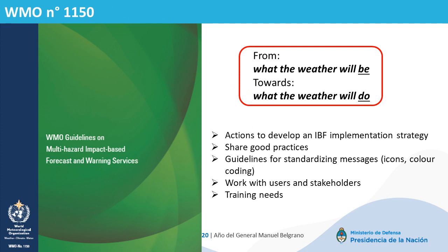The paradigm of forecast and warning services is changing. Met services are used to talk about what the weather will be, but society needs to know what the weather will do and how to ensure their safety and protect their property. That's why the World Meteorological Organization has written the guidelines on multi-hazard impact-based forecast and warning services — the WMO 11 and 50. These guidelines offer recommendations and share good practices about the actions that should be taken to develop impact-based forecasts.